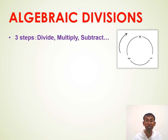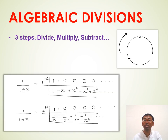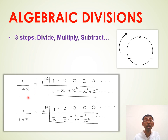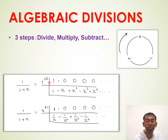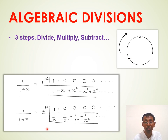Algebraic divisions — the procedure remains the same: divide, multiply, subtract. For example, we have the problem 1 divided by (1 + x). The funny thing is this denominator, or divisor, 1 + x can be written as x + 1 also. Accordingly, we can set up this problem in two ways: either we use 1 for division and x for the flag, or x for division and 1 for the flag. We can get completely different answers. These are your Taylor series expansions.